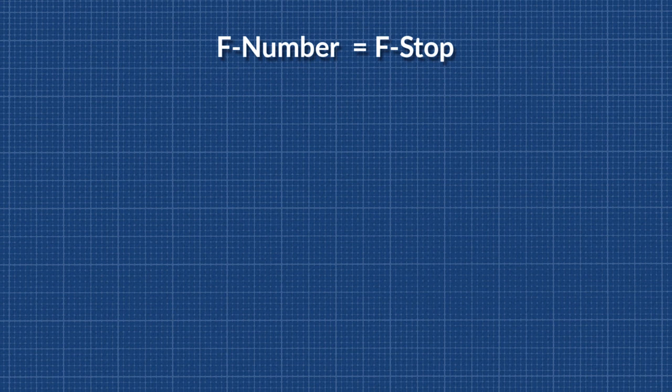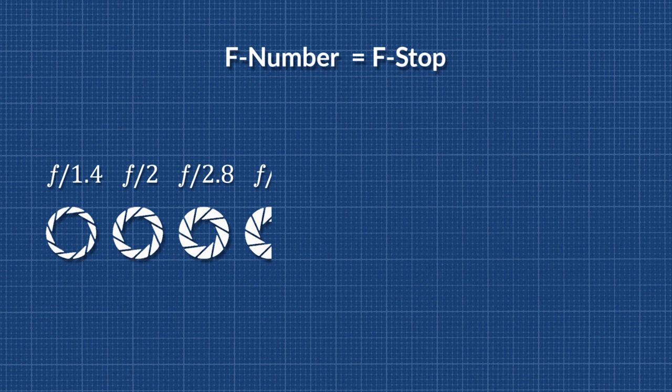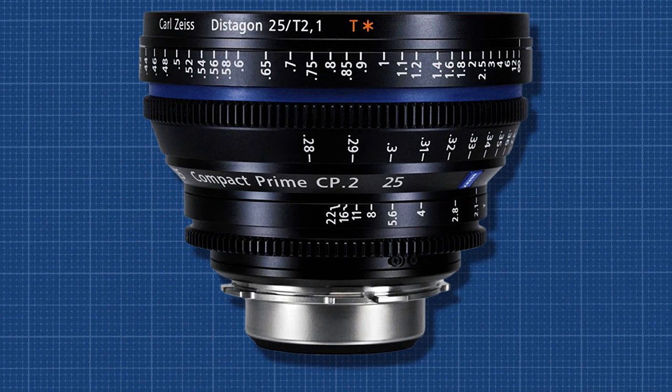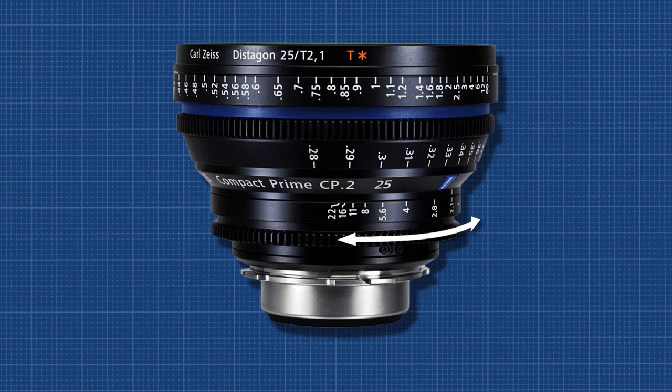Here is the series of numbers of decreasing aperture: F1.4, F2, F2.8, F4, F5.6, F8, F11, F16, and F22. Most lenses have the available F-numbers written on the lens. On high-end cinema lenses, the aperture ring is often de-clicked, allowing for very precise aperture control and all in-between F-stops.